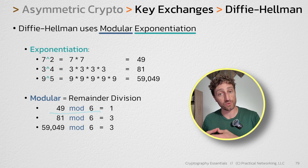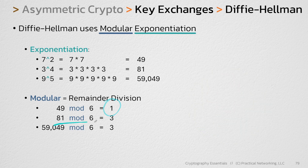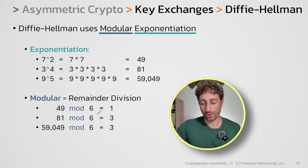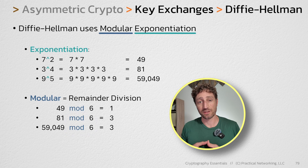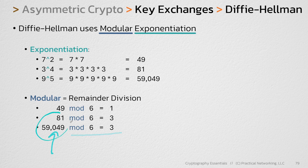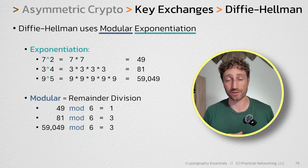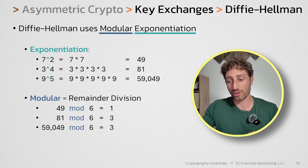Now let's talk about modular. Modular is simply doing remainder division. For example, if I ask you to solve for 49 mod 6, I'm asking you for the remainder when you divide 49 by 6. Well, 6 can go into 49 eight times evenly, getting you to 48, which leaves you with 1 as the remainder. 81 mod 6 gets you 3 as a remainder, and 59,049 mod 6 will also get you 3 as the remainder. Notice both of these resulted in the same remainder of 3. So if you knew the result was 3, and even if you knew we used mod 6, there's no way to really know what you started with. This is what Diffie-Hellman does — number combinations in a way that even though you see the result, you still don't know what you started with. That's a result of modular exponentiation.